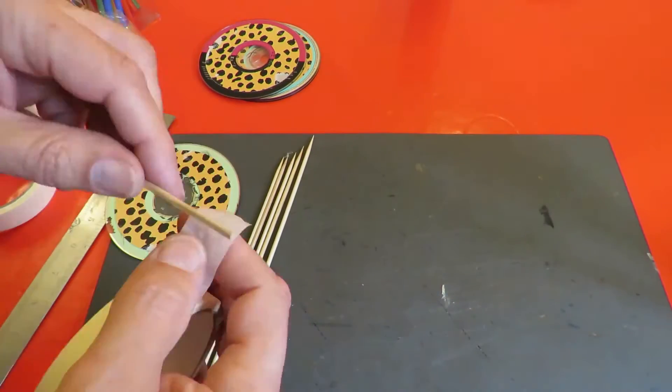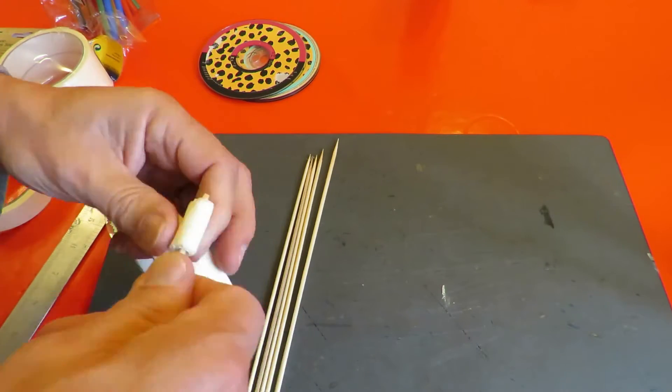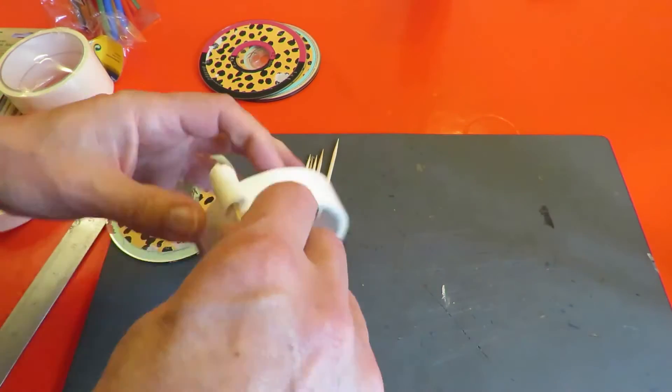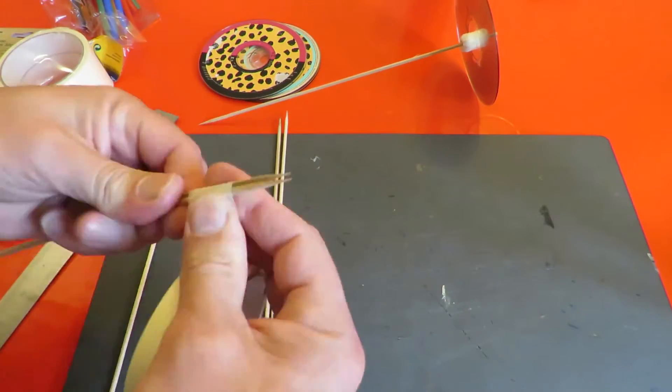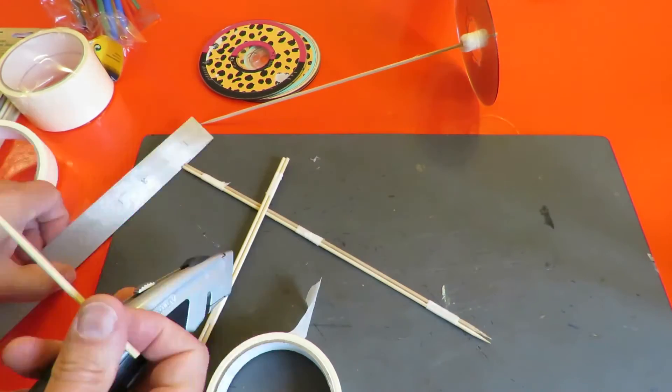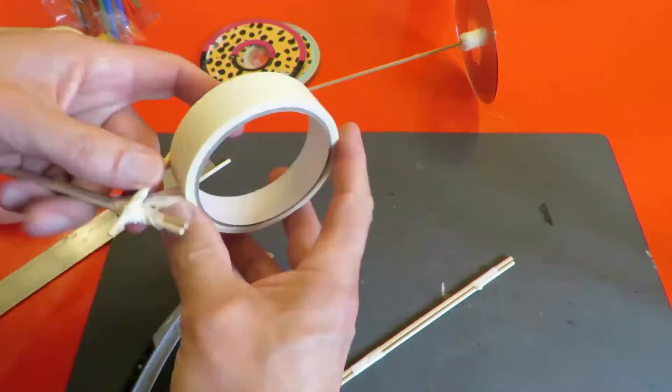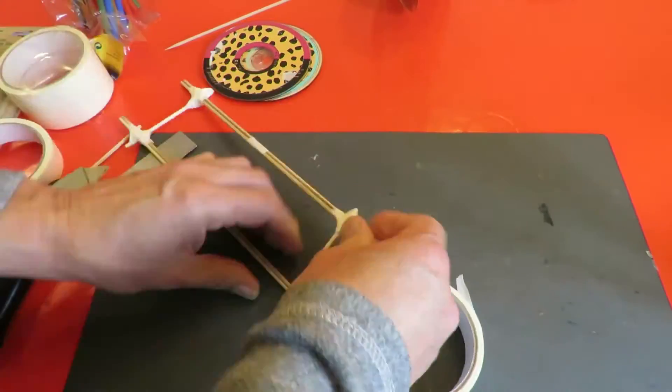I've had a look through my bits and pieces. I've got some old CDs here that I've used for wheels before. I've just measured my barbecue skewers and they're a little bit long, but I'm not going to worry about that. I've got some drinking straws, they're probably not exactly the right ones but they'll do for me.